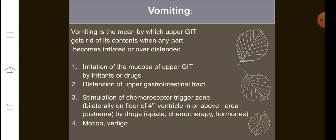Vomiting can also be stimulated by certain chemoreceptor trigger zones. We have chemoreceptors in our brain, bilaterally present on the floor of the fourth ventricle. This trigger zone can be stimulated by certain drugs such as opioids, chemotherapy drugs for cancer treatment, or certain hormones. The most important hormone that causes vomiting is HCG — human chorionic gonadotropin — which is increased in the first trimester of pregnancy.